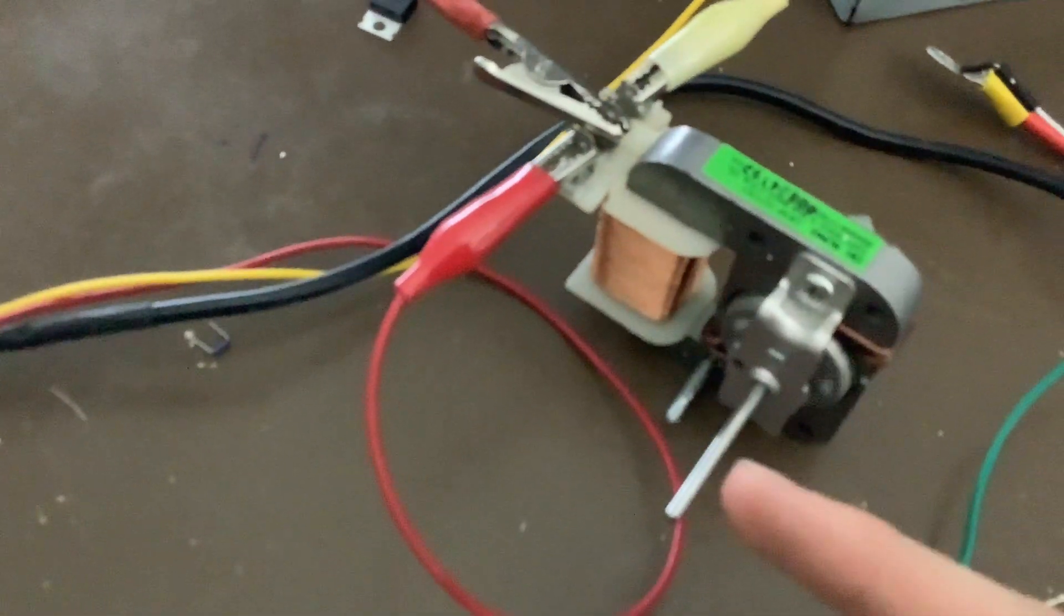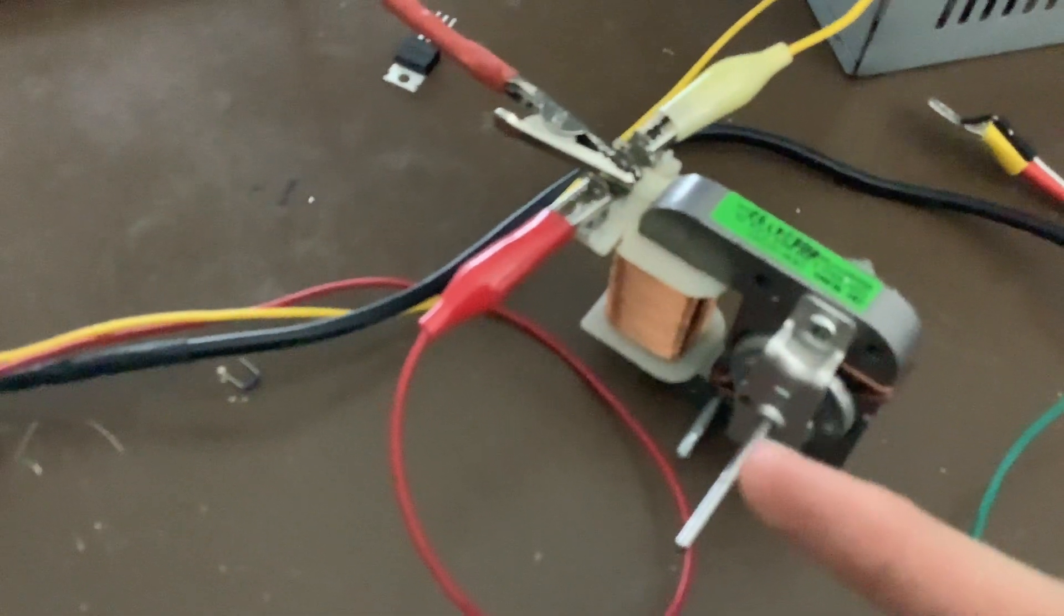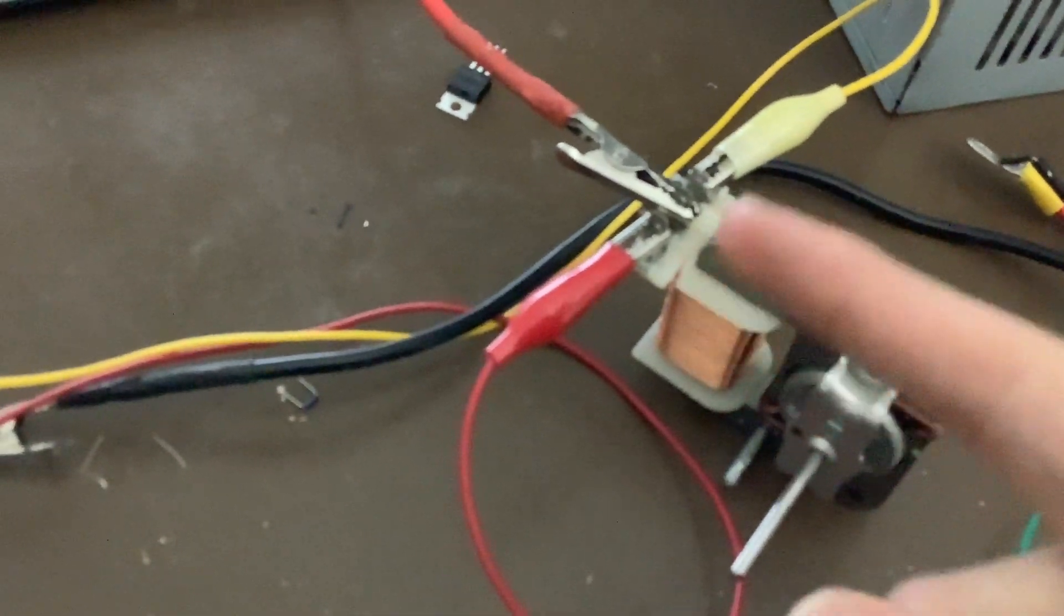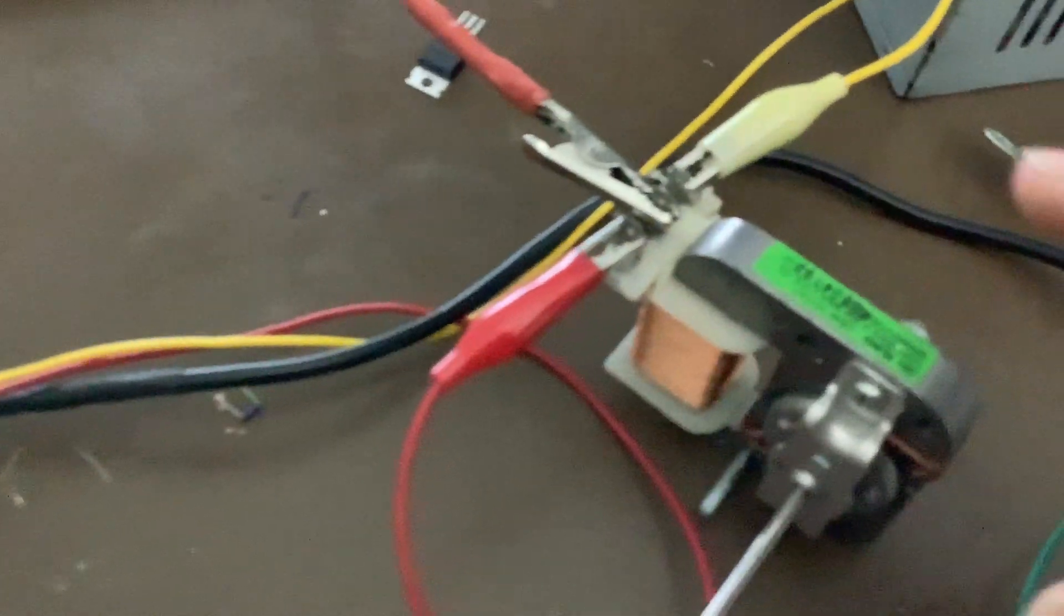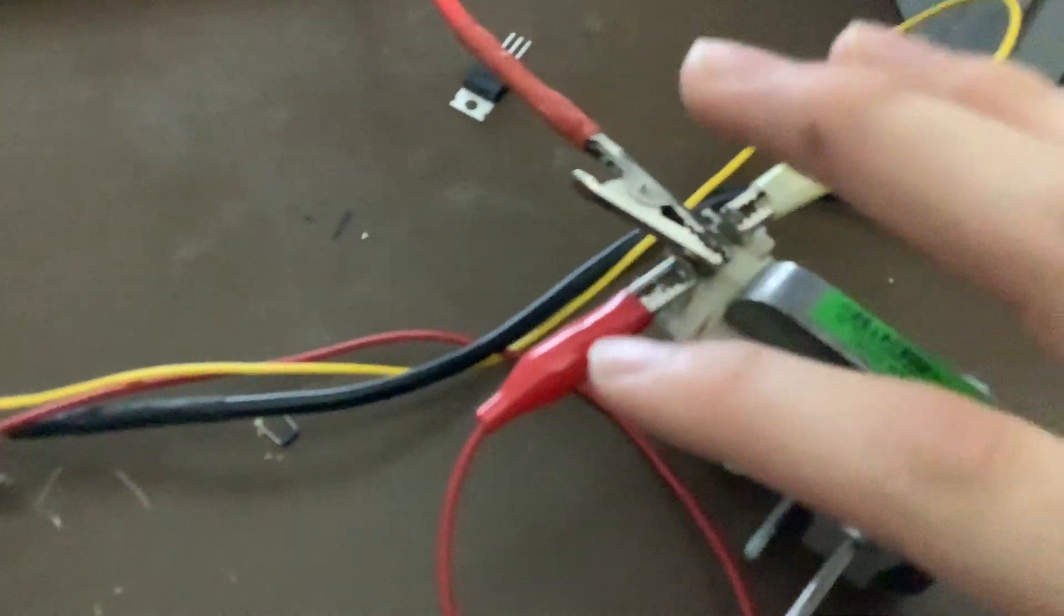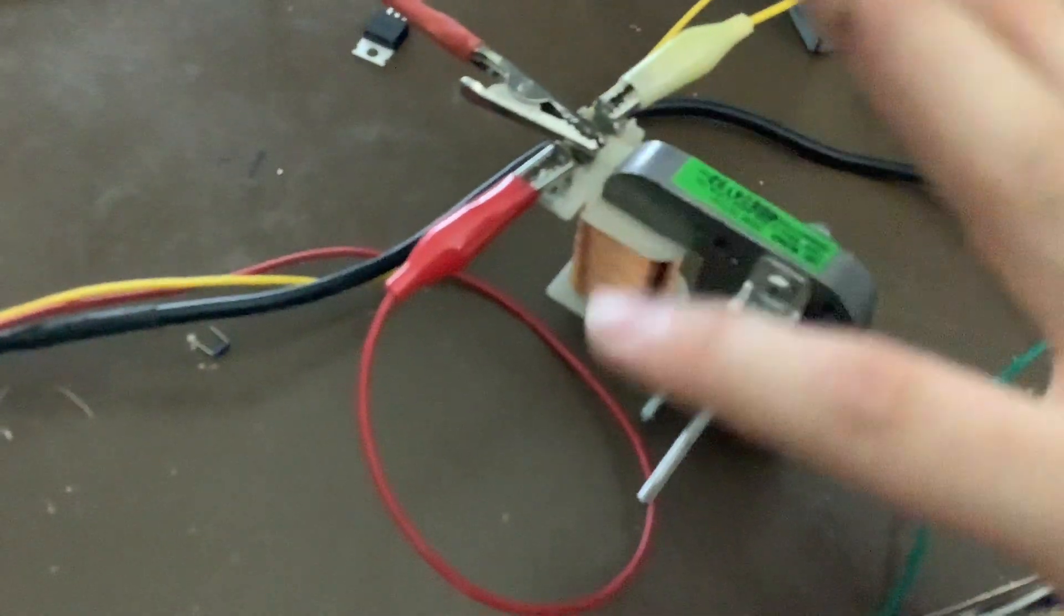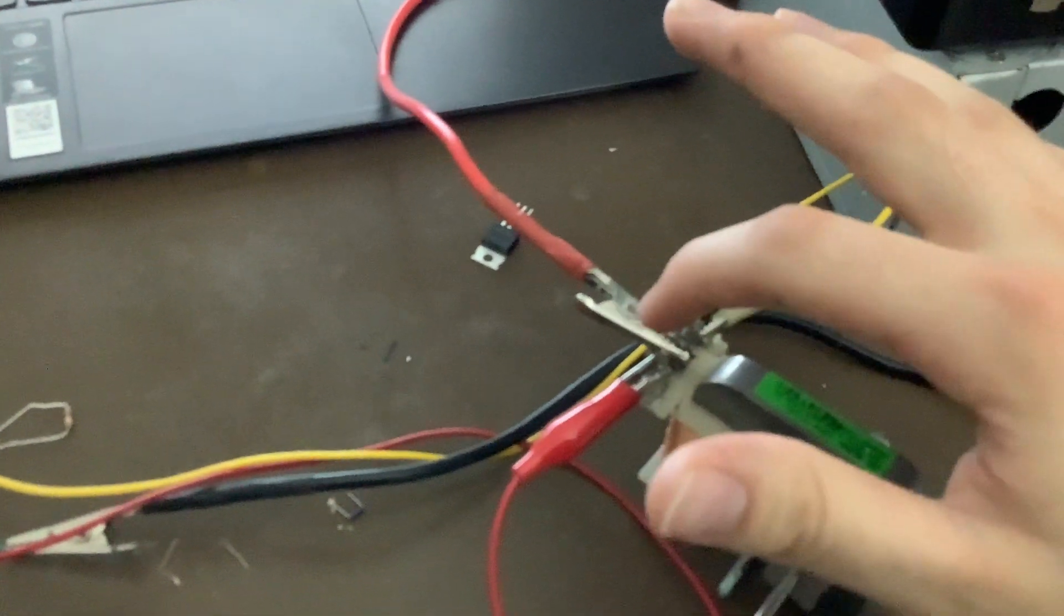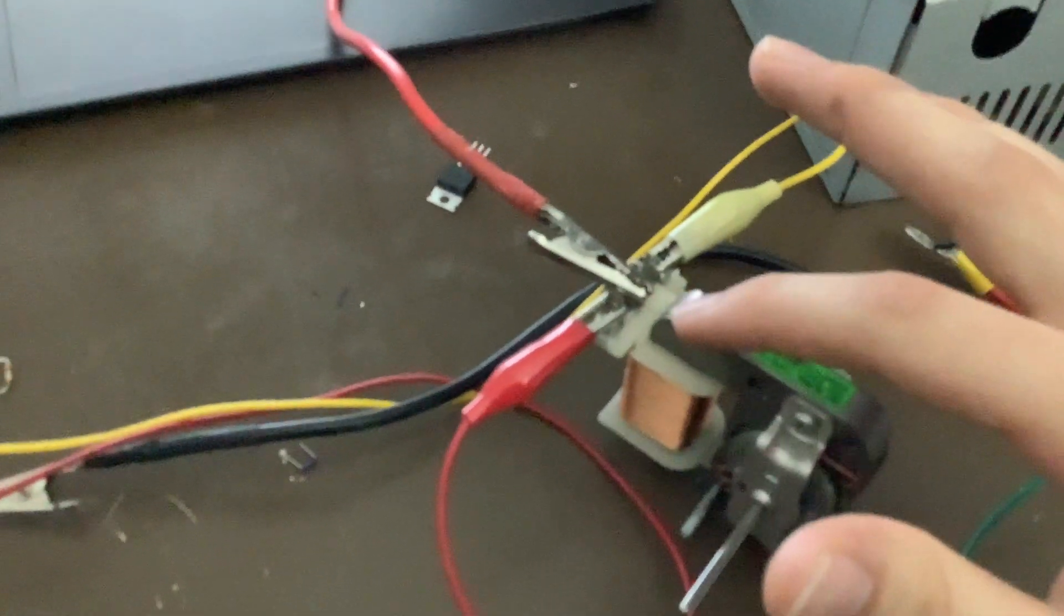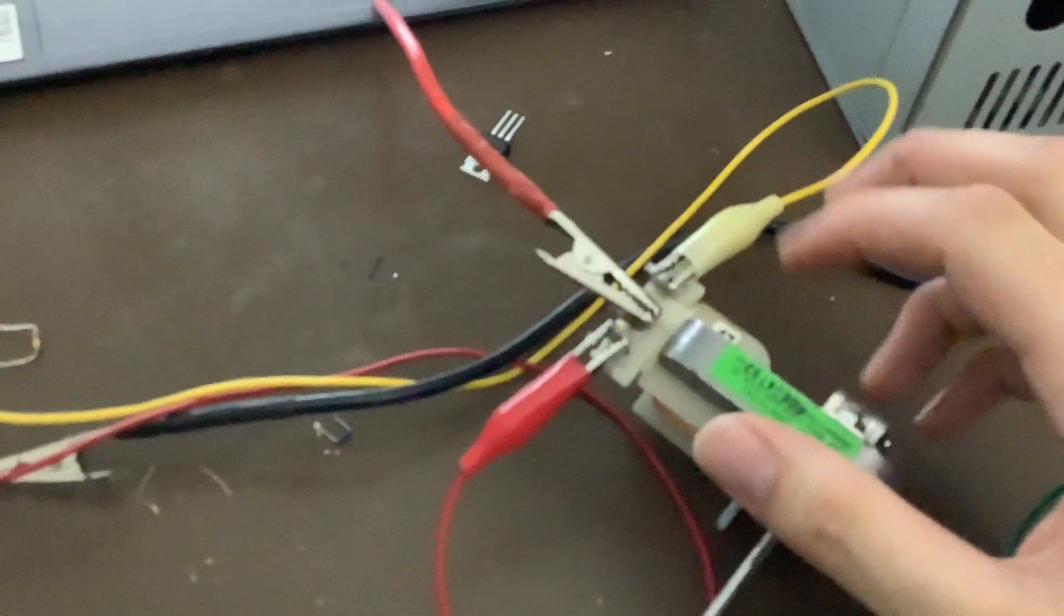The neat thing about this induction motor is that this magnet part is center tapped, which means that there's a coil of wire and this part that the positive is connected to actually goes to the center of the wire and these are on the edges of the wire.